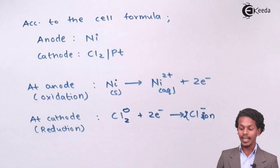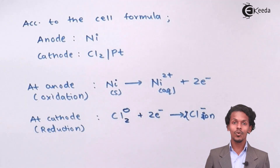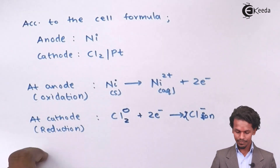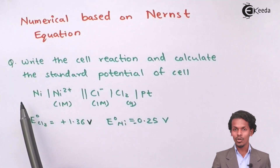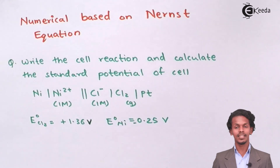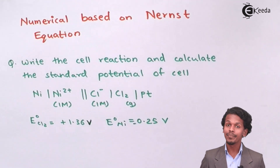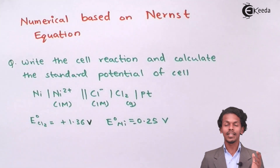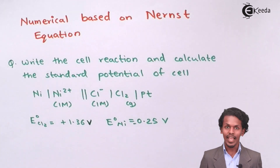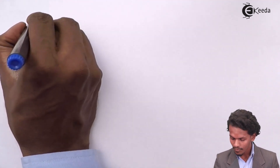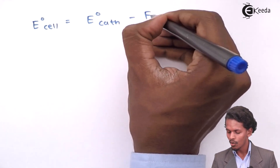Now let us find the standard cell potential from the data provided. Nickel is acting as the anode and chlorine is acting as the cathode. The standard cell potential is the difference between the standard electrode potential of the cathode and the standard electrode potential of the anode: E°cell = E°cathode − E°anode.